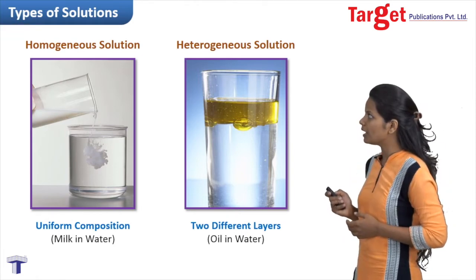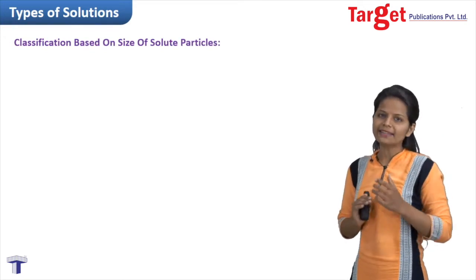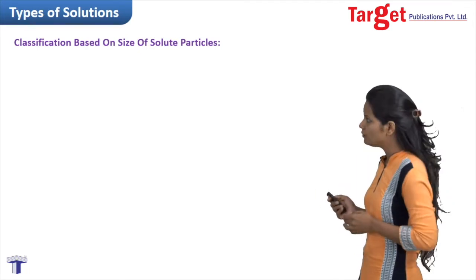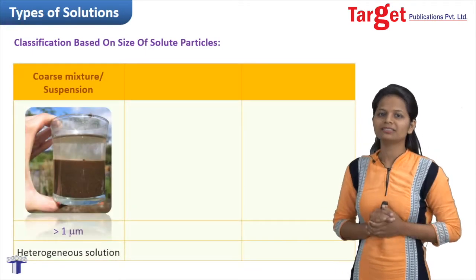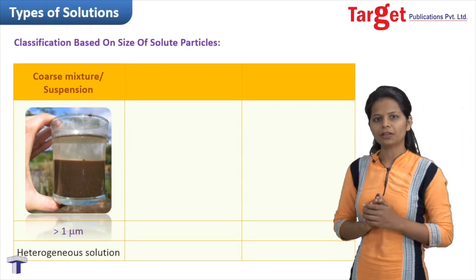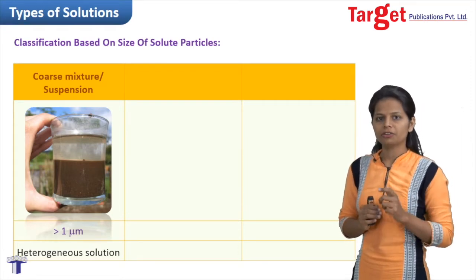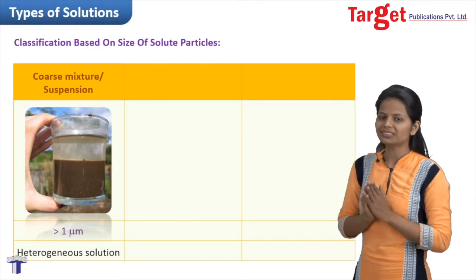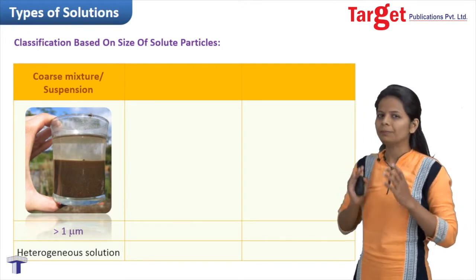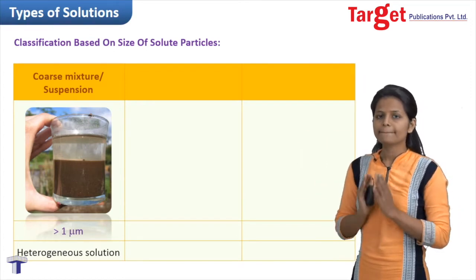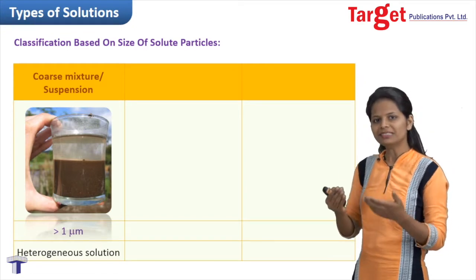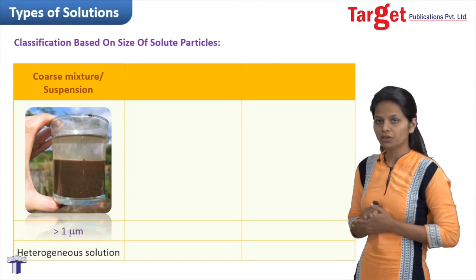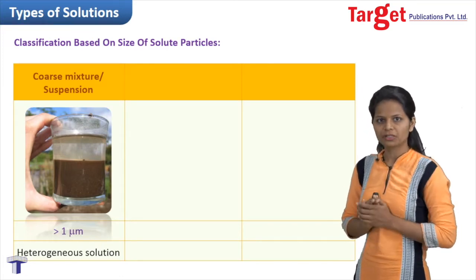Now let's have a look at the classification of solution based on the size of solute particle. Based on that, mixtures are classified into three different categories. The first one is called a coarse mixture or suspension. In this type of mixture, the size of solute particle is large — greater than 1 micrometer (10⁻⁶ meter). Since the particle size is so large, this is a heterogeneous mixture. The simplest example is sand added in water, where sand particles settle at the base, creating two visible layers.